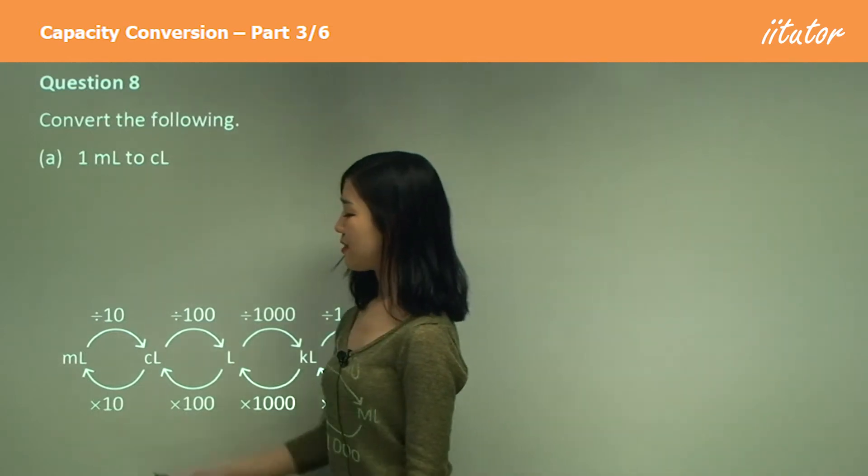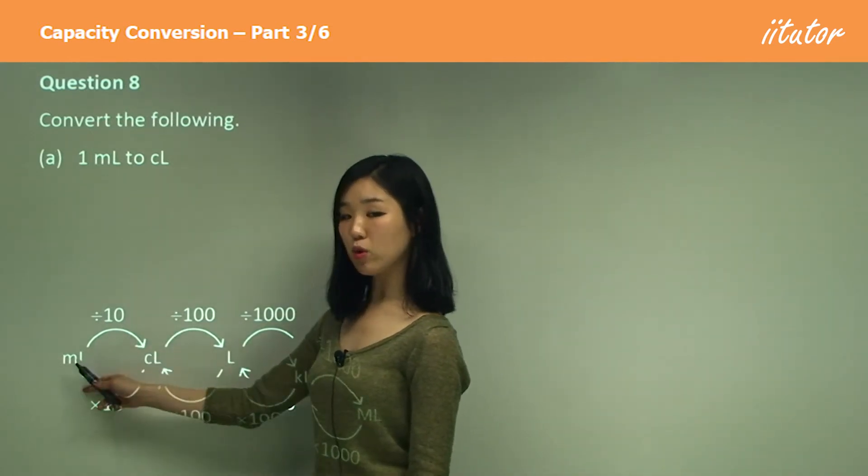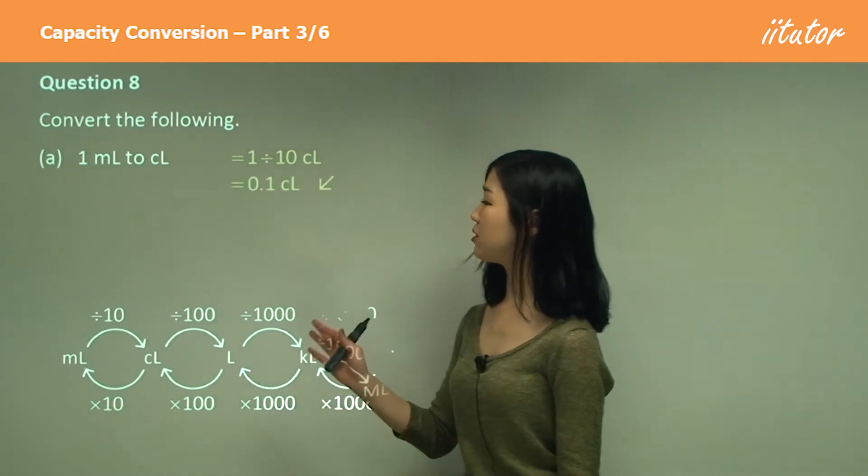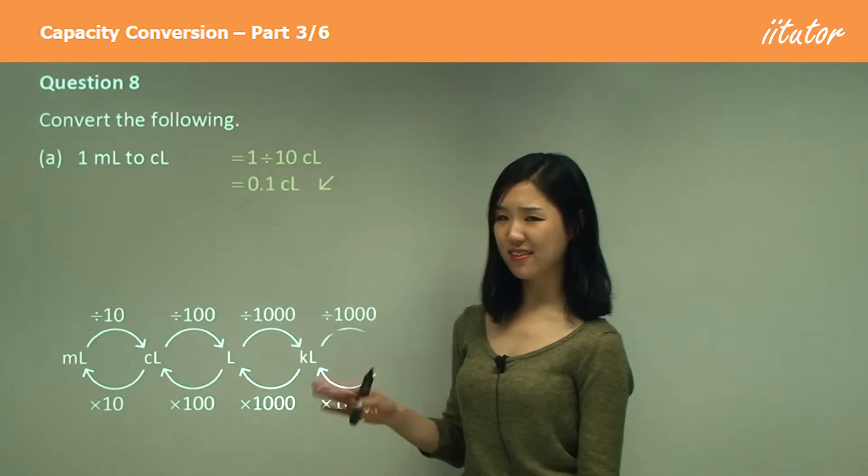Okay, milliliters to centiliters. Milliliters to centiliters, small to large, divide by 10. Okay, which is simply 0.1 centiliters. Easy stuff.